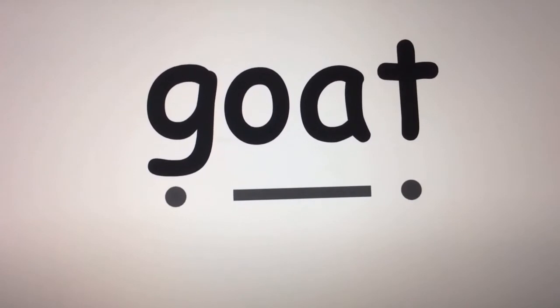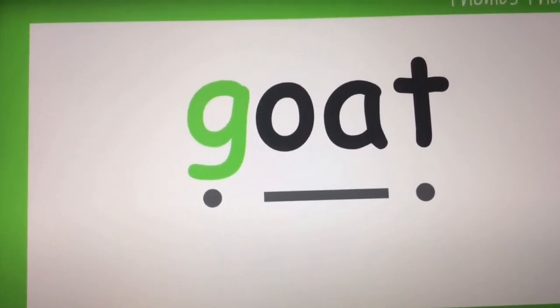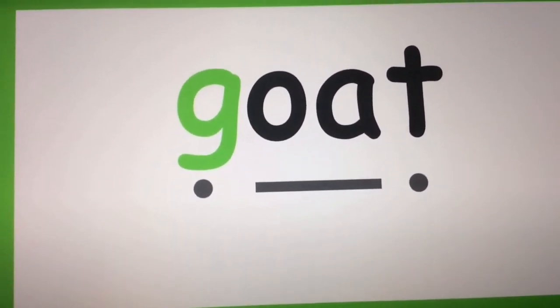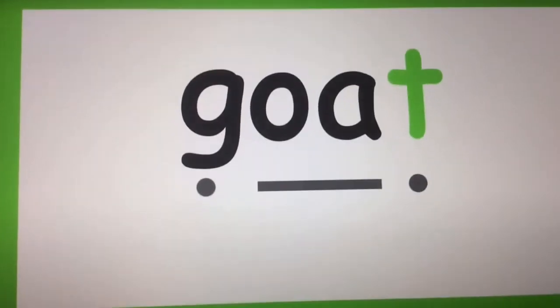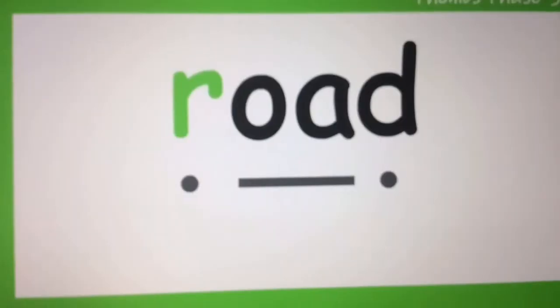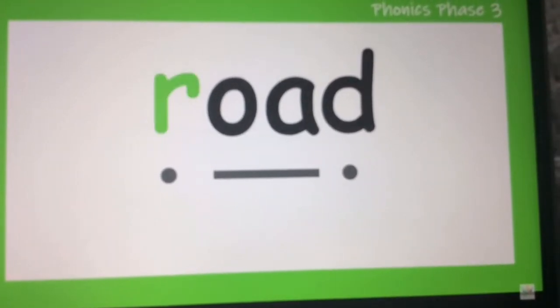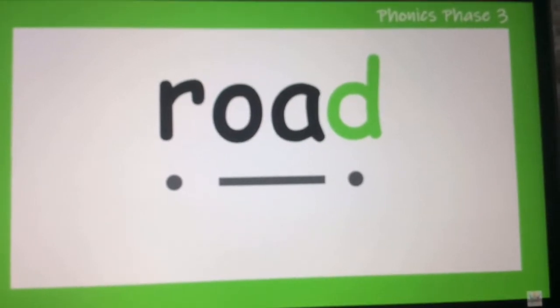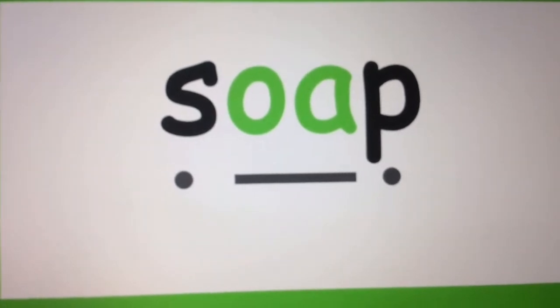Our turn everybody. We're going to read some different words with the OA digraph in. Here's the first one. Let's have a look at the different sounds in the word. Our turn, so make sure you're joining in with me. Soap. Soap. Soap. Let's do that again. Soap. Soap.